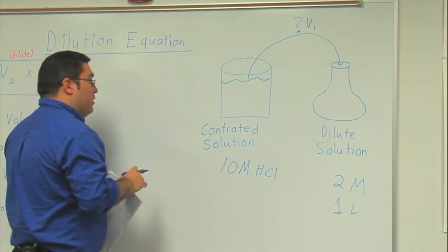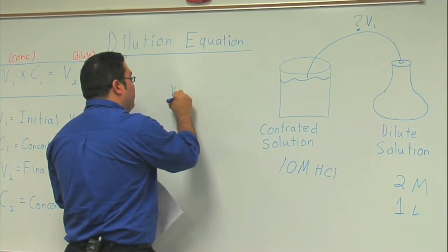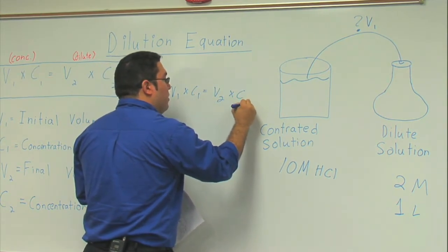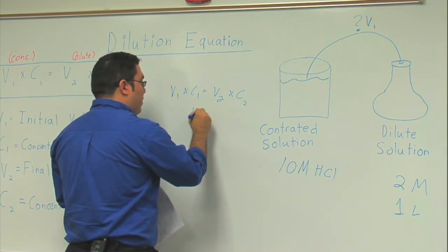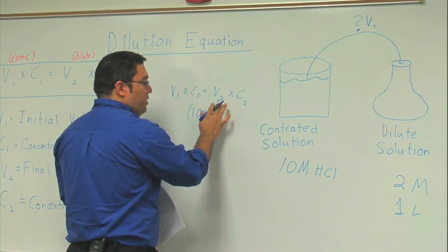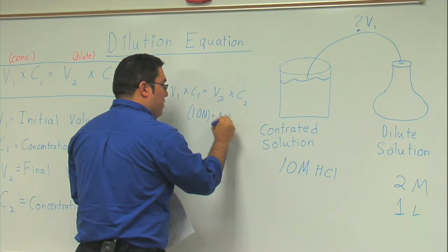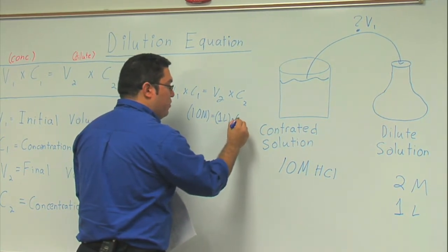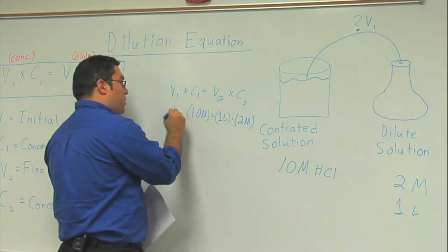Let's go ahead and take a look. We have V1 times C1 is equal to V2 times C2. You simply plug in the variables. So here we have the concentrated solution, so I'll go ahead and plug in here 10 molar. Over here I have V2, my final volume, which I know I need 1 liter. My concentration final that I was shooting for was 2 molar, and then my unknown is over here, it's my volume initial.